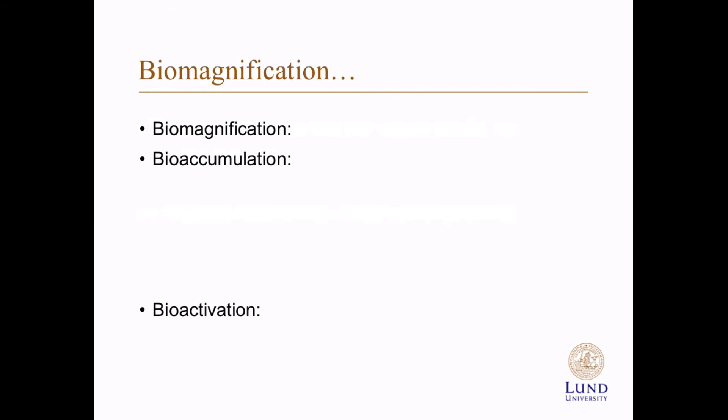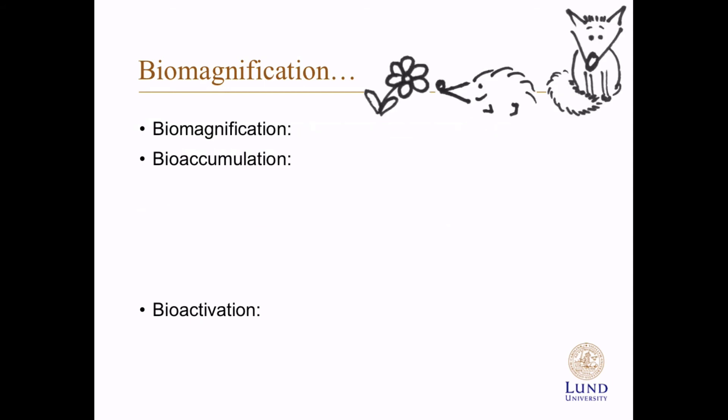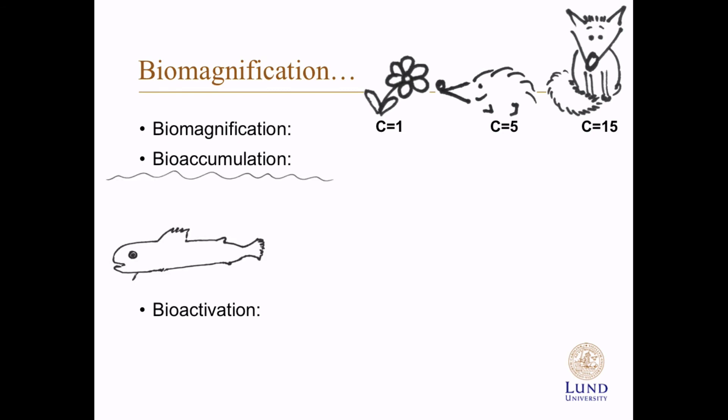Biomagnification is when the concentration of a substance increases with trophic levels — so higher in the hedgehog than the flower, and higher in the fox than in the hedgehog. Bioaccumulation is when the concentration within a species is larger than the concentration in the surrounding environment or in the food. The hedgehog in the biomagnification example has a higher concentration than the flower, so there is bioaccumulation there. Bioaccumulation is a prerequisite for biomagnification.